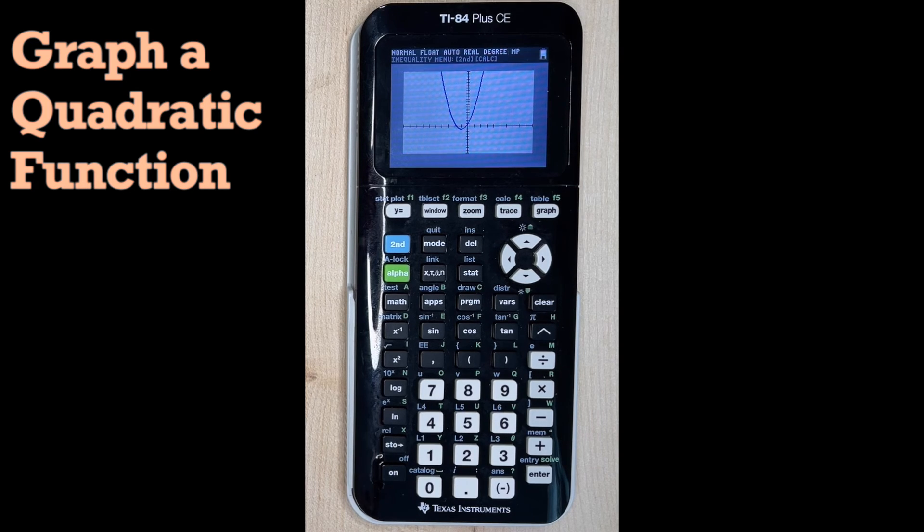We can also find what's called the maximum or the minimum. In this case, this parabola is opening up, so it would have a minimum point, and that's where the vertex is located right here. If you want to learn how to find the minimum or maximum of a parabola, look at the video in the top right-hand corner right now. That's it for today.